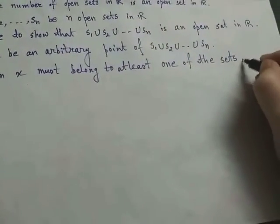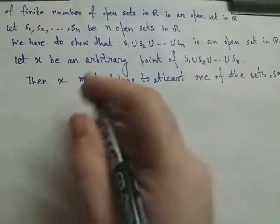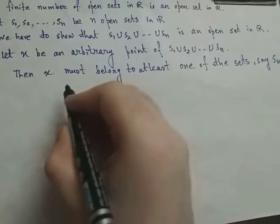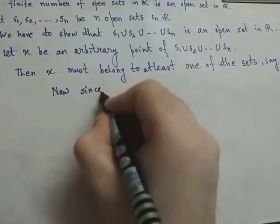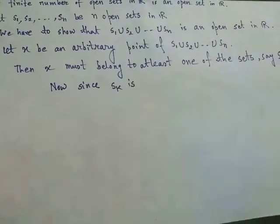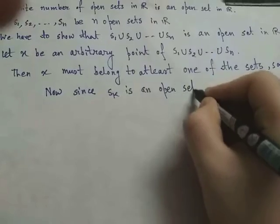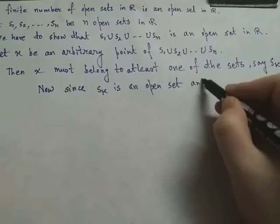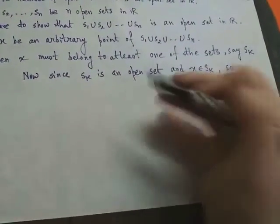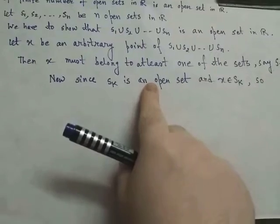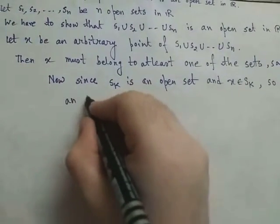Suppose x belongs to Sk, where Sk is some one of the sets S1, S2, ..., Sn — it could be any one of them. Now, since Sk is an open set and x belongs to Sk, by definition of open set, x must be an interior point of Sk, because every point of an open set is an interior point. So x is an interior point of Sk.